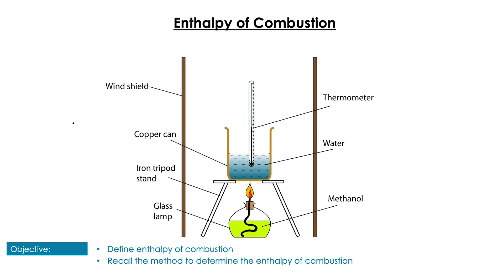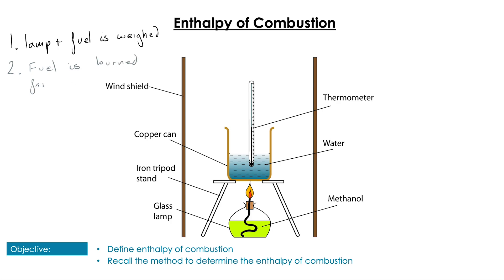So how do we go about calculating this? We'd set up our equipment like in this diagram. The first thing we do is take a lamp with the fuel we want to find the enthalpy of combustion of, weigh it with the fuel inside before burning it, and set it a known distance underneath a copper can calorimeter with a known mass of water and a thermometer in it. We also have windshields on the side to try and reduce the heat lost to the environment. Once set up, we record the initial temperature of the water and the fuel is then burned for a known amount of time or until a set temperature change is reached.